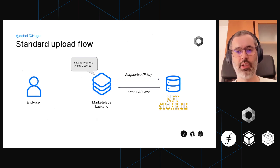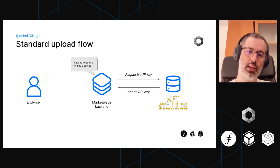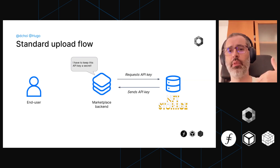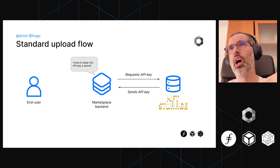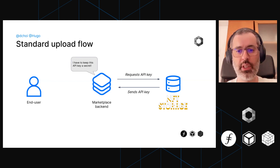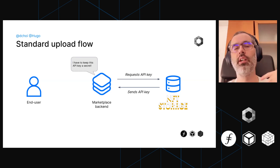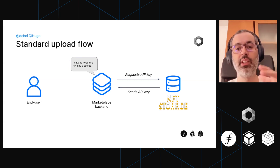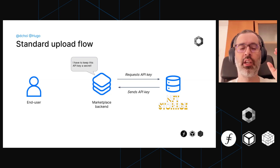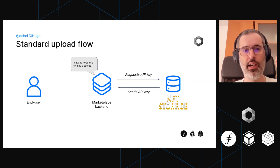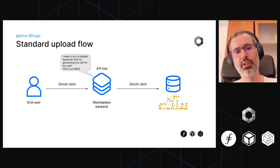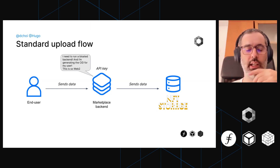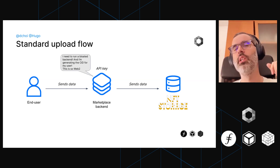Here's a small diagram to explain this. The marketplace needs to request an API key from us — that's how they interact with our API. We send them the API key and they need to keep it secret, saved securely in their backend. If the user needs to upload something, they need to go through the marketplace backend, and then the marketplace backend sends the data to us. This is a bit 'Web2' and we wanted something better.